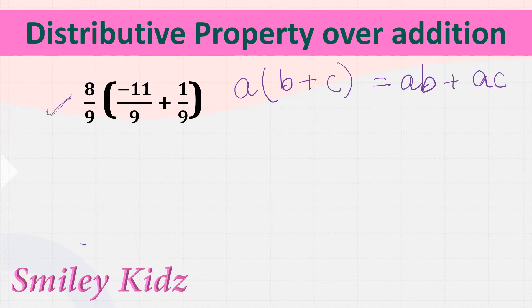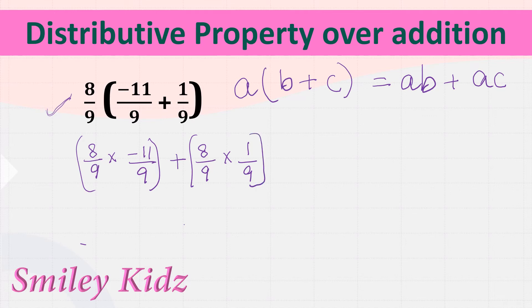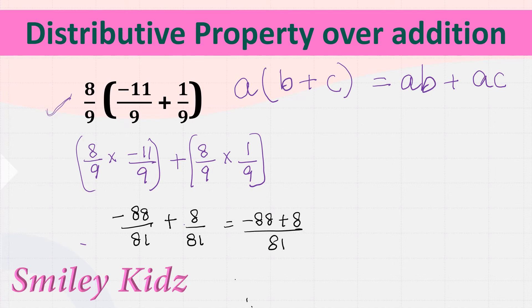a multiplied by (b plus c) equals a multiplied by b plus a multiplied by c, which is equal to 8/9 multiplied by (−11/9) plus 8/9 multiplied by 1/9. Solving what is in brackets: this equals −88/81 plus 8/81. We are having different signs so we will be subtracting, which is equal to −80/81.